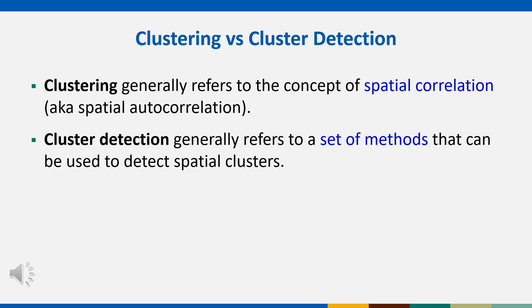Cluster detection is defined as a geographically bounded sub-area on your map, such as a collection of adjacent tracts whose combined cancer rate is anomalous compared to what is going on elsewhere on the map. Anomalous can be on the high end, like a hot spot, or the low end, like a cold spot. Similar descriptions hold when dealing with spatial point-level data, such as address-level data.